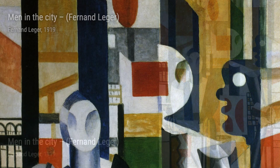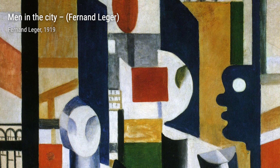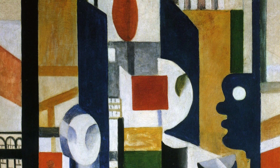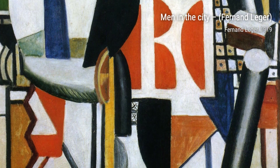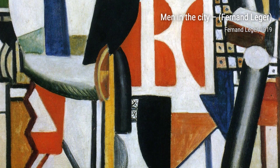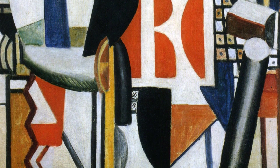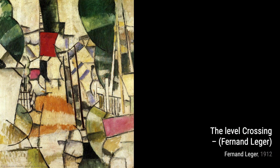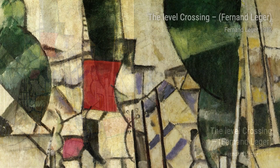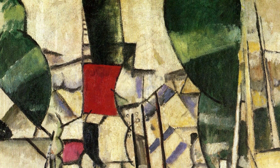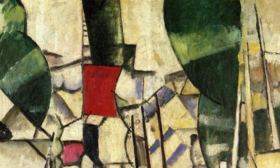Men in the City portrays the hustle and bustle of urban life. Léger's use of bold lines and simplified forms captures the energy and movement of the cityscape. The Level Crossing takes us to a railway crossing, with Léger's distinctive style bringing a sense of dynamism and excitement to the scene. Moving on to Untitled 4219, Léger's abstract composition invites us to interpret and explore the artwork on our own terms.